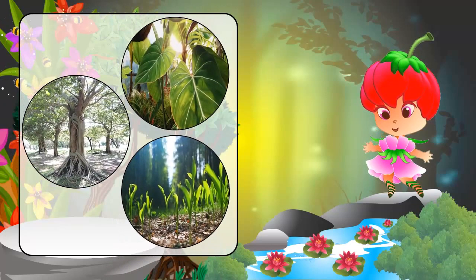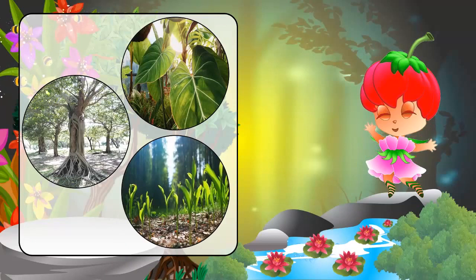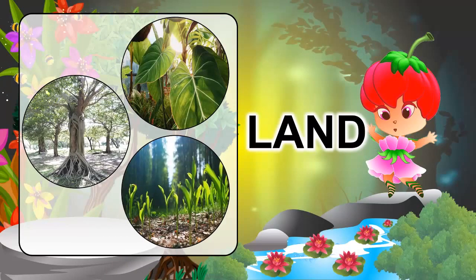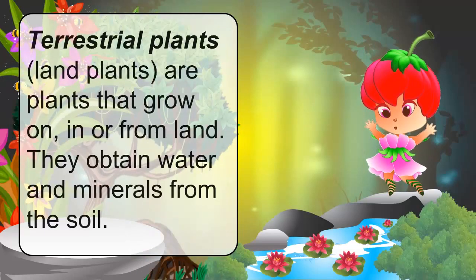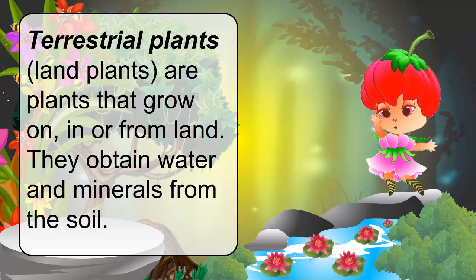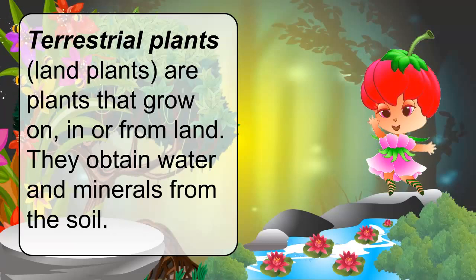Take a look at these plants. Where can you find them? You are correct — on land! Terrestrial plants, or land plants, are plants that grow on, in, or from land. They obtain water and minerals from the soil.